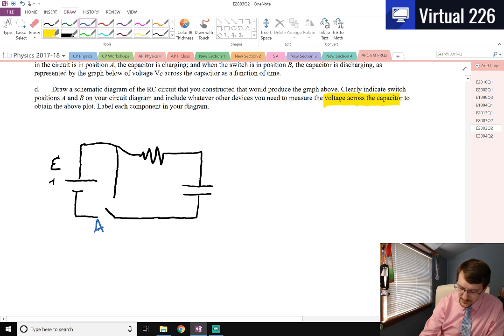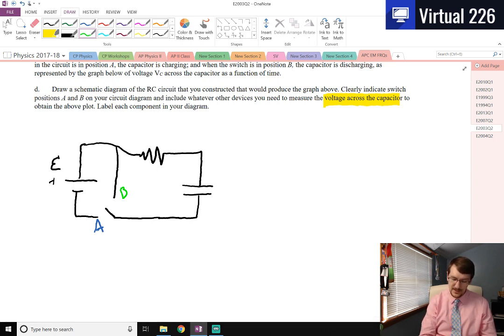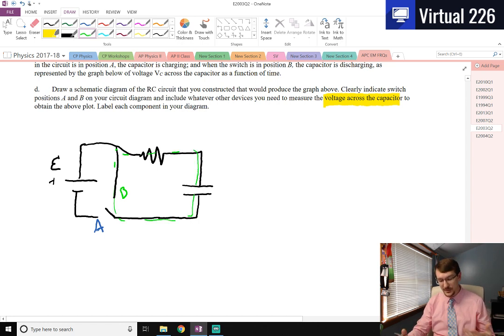What will happen now is that when we close the switch to A, we're going to get the same series circuit that we had before, where we're just going around the loop. When we switch the switch up to B though, now we've completely eliminated the left side of this, the EMF out, because we're going to be stuck within this loop right here. And that will be our discharge of the system. So that's what we're looking at there.